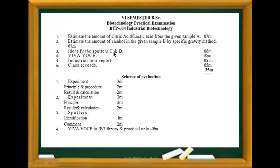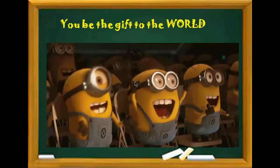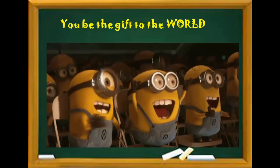For the spotters in Paper 7 Industrial Biotechnology, any two spotters will be given from the following list: stirred tank fermenter, airlift fermenter, packed bed fermenter, fluidized bed bioreactor, beer production, tray fermenter, drum fermenter, yogurt, cheese, single cell protein, mass culture of Spirulina, production of polyhydroxyalkanoates (PHA), production of penicillin, production of glutamic acid, and production of vitamin B12. Keep these in mind for the examination.